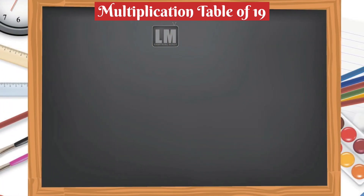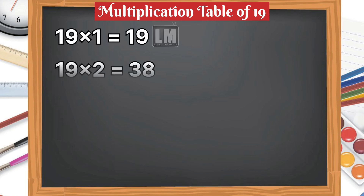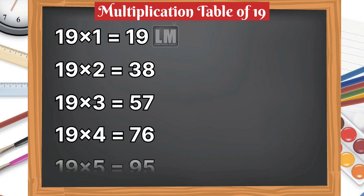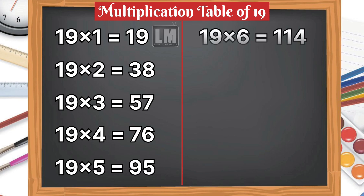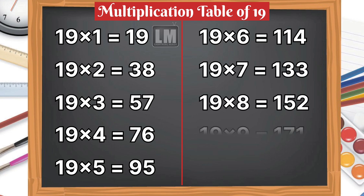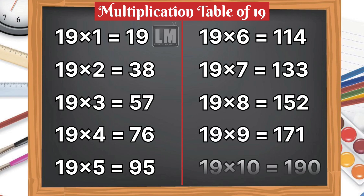Let's learn table of 19. 19 1s are 19, 19 2s are 38, 19 3s are 57, 19 4s are 76, 19 5s are 95, 19 6s are 114, 19 7s are 133, 19 8s are 152, 19 9s are 171, 19 10s are 190.